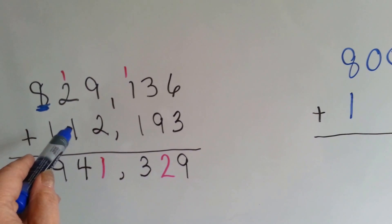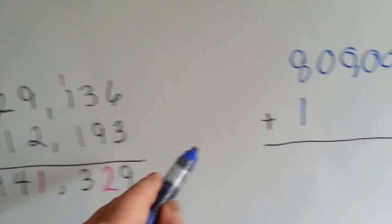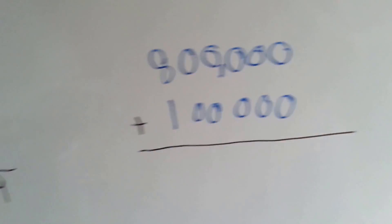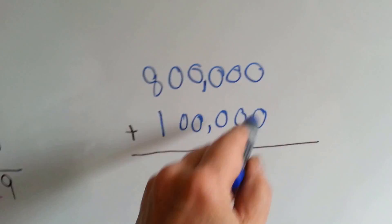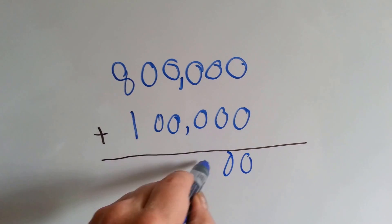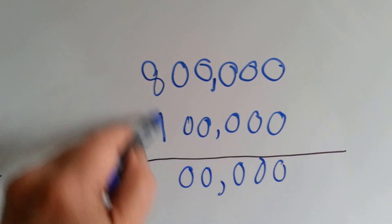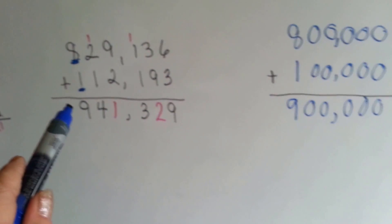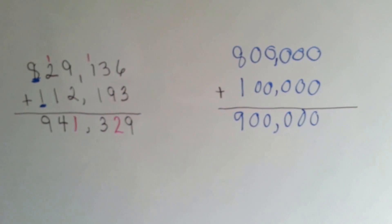When it's finished doing its job, it turns into a 0, and so do all the other ones. So we need 1, 2, 3, 4, 5 zeros. Put our comma in. So now we have our rounded number, and we can add: 0, 0, 0, comma, 0, 0, and 9. The real answer was 941,329, and our estimate is 900,000.